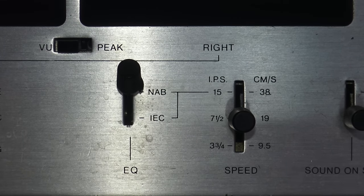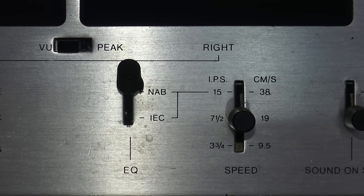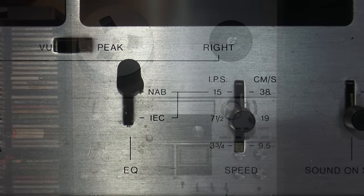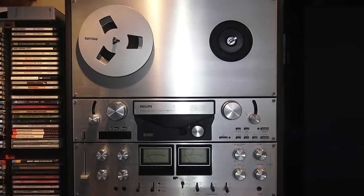If your deck can only handle NAB or only IEC, you can still reproduce tapes from the other standard, but you'll have lower quality and some issues in reproduction. Nothing too serious — you can still appreciate the music — but it's better to have a machine capable of reading the correct equalization for your tape. Okay, so let's try to listen to a tape.